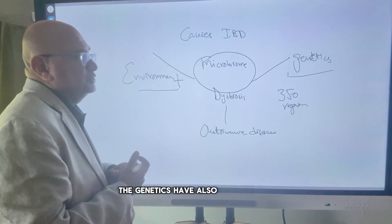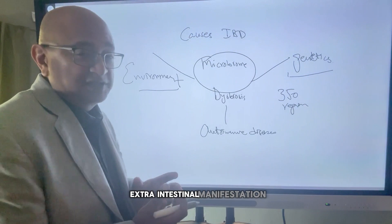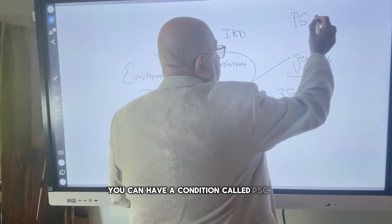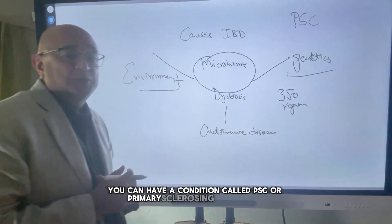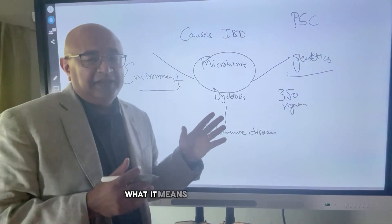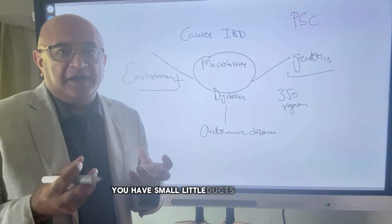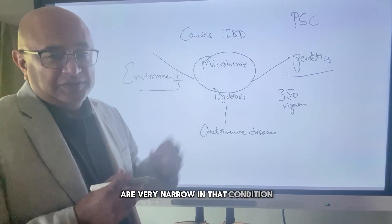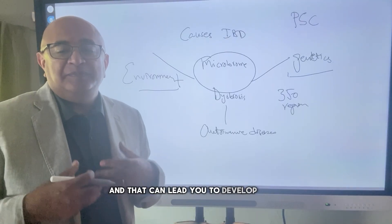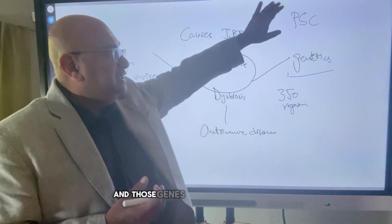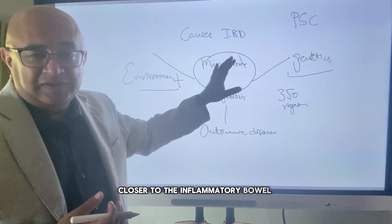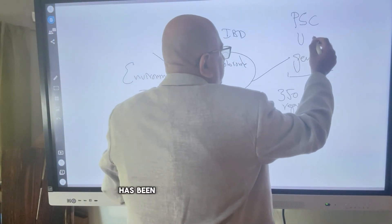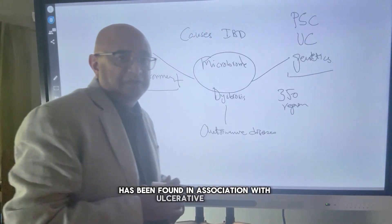Genetics have also shown that certain extra-intestinal manifestations are linked. For example, in the liver, you can have a condition called PSC, or primary sclerosing cholangitis. This means that the small ducts in the liver become very narrow, which can lead to liver disease. Those genes have also been found closer to the inflammatory bowel disease genes, and PSC has been found in association with ulcerative colitis.